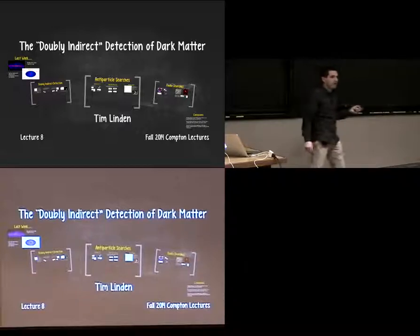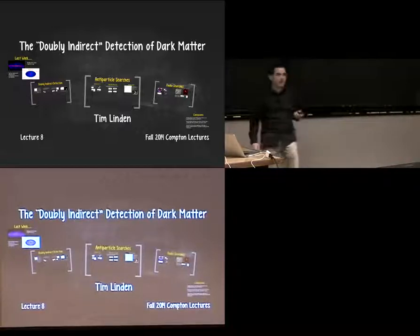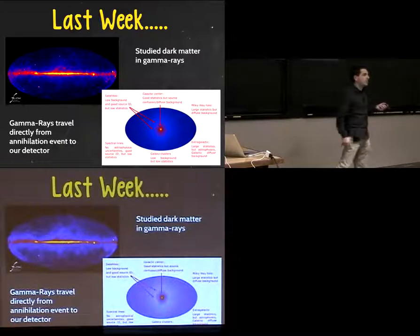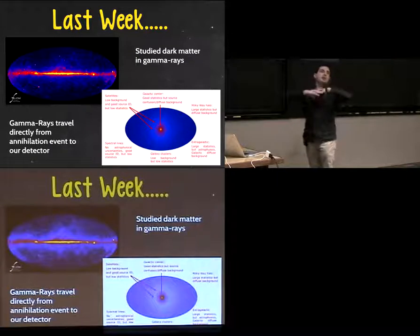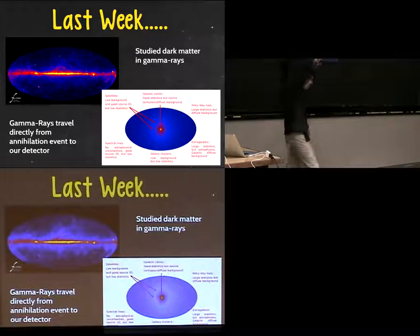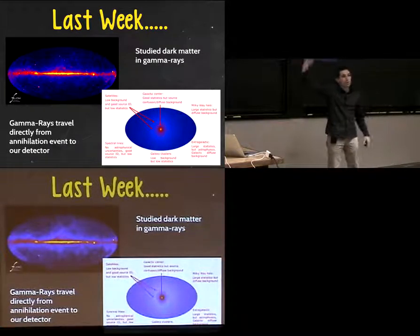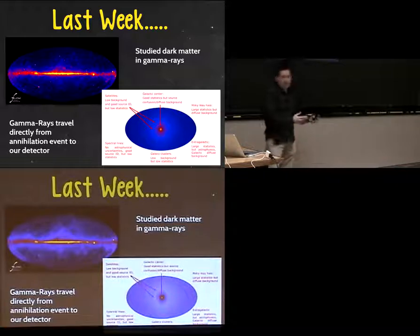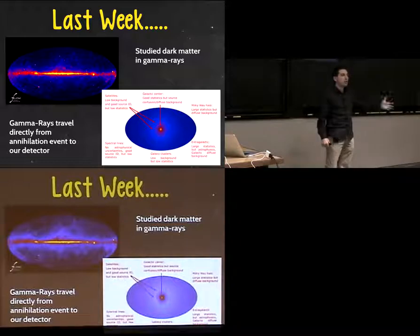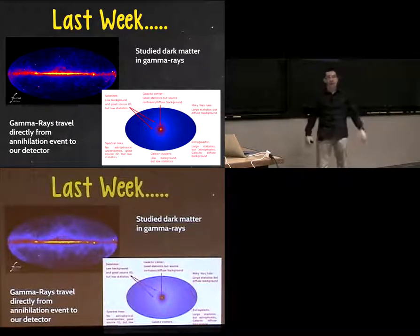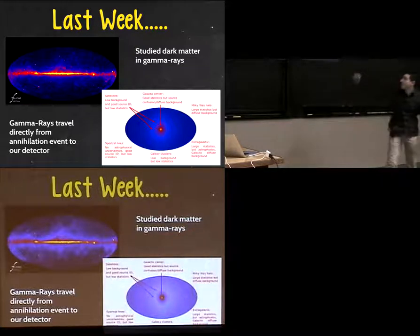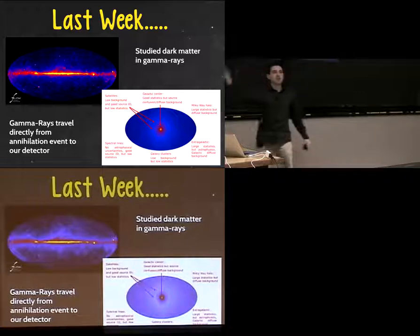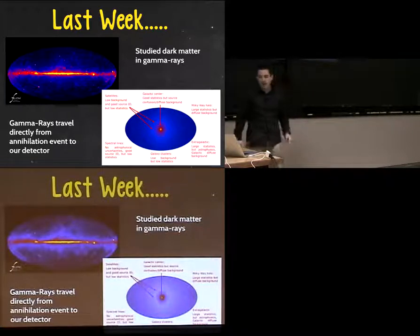Today we're going to talk about what I'm calling the doubly indirect detection of dark matter. If you recall from last week, we discussed dark matter detection in gamma rays from space: two dark matter particles annihilate, they produce high-energy photons called gamma rays, those gamma rays travel straight to Earth and are picked up by something like the Fermi telescope or an atmospheric Cherenkov telescope like VERITAS. The key part of that approach was that we knew the morphology of the signal—we knew where it was supposed to be on the sky, near the galactic center or in dwarf galaxies—so we had directional information.